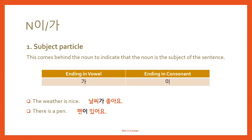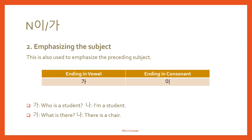The second use of 이/가 is emphasizing the subject. Ending in a vowel, 가; ending in a consonant, 이. For example: 'Who is a student? I'm a student.' So 누가 학생이에요? Not another person — it's me. To emphasize the subject: 제가 학생이에요.